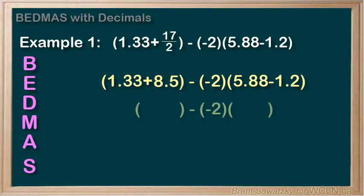Now we have addition and subtraction next in each set of brackets. 1.33 plus 8.5 equals 9.83. And in the second set of brackets, 5.88 minus 1.2 equals 4.68.